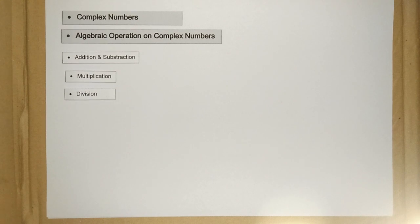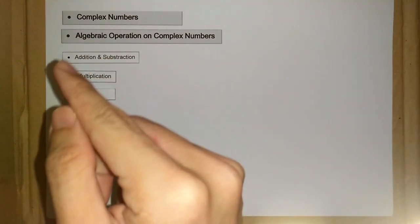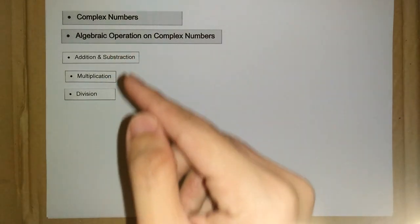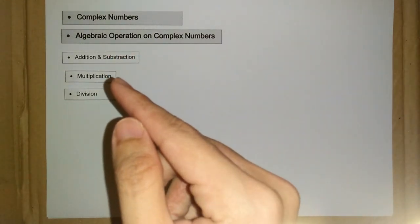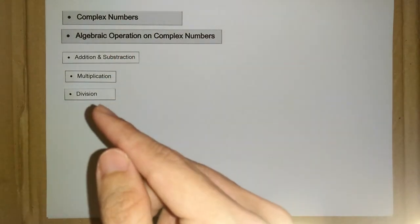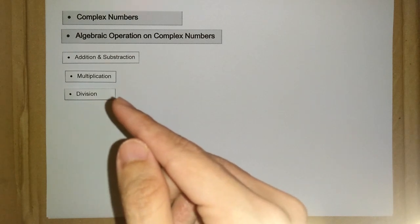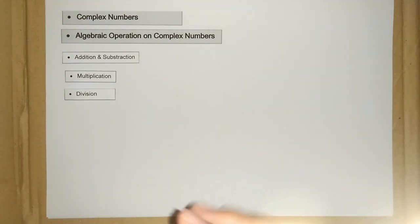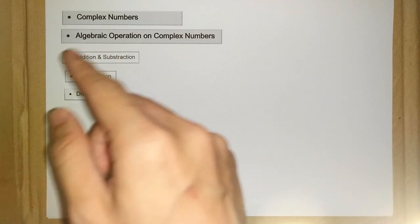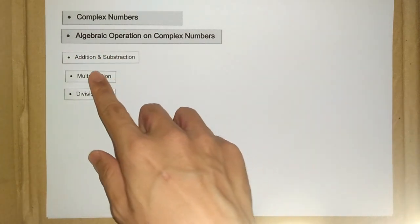There are four basic operations: the first one is addition, the second one is subtraction, we also have multiplication on complex numbers, and we have division on complex numbers. In this video, we're just focusing on the addition and subtraction on complex numbers.